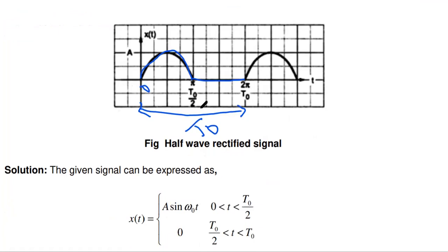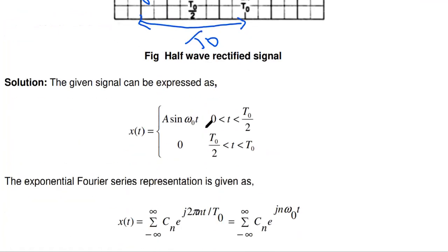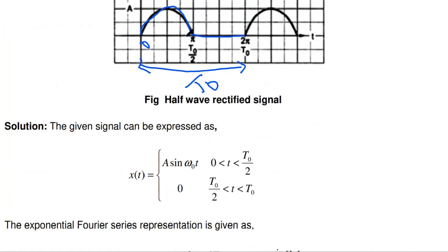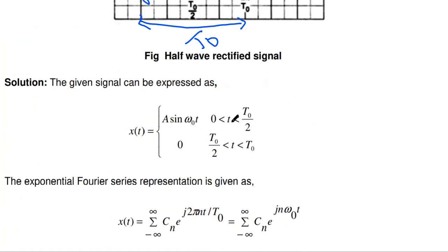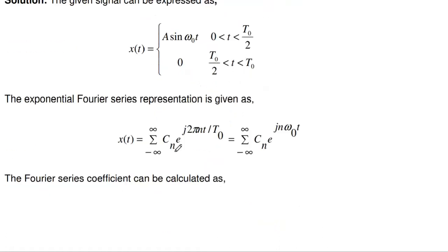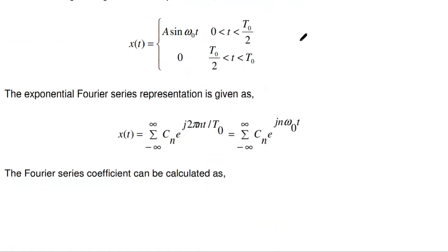We have to mathematically represent this half wave signal. The mathematical representation for one cycle is: x(t) = A sin(ω₀t) for t between 0 and T₀/2, and x(t) = 0 for t between T₀/2 and T₀. This is the mathematical representation of the given waveform.